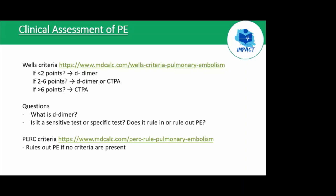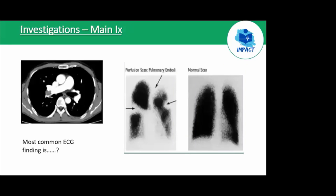When not sure about PE, you would proceed to CT pulmonary angiography (CTPA), which enables direct visualization of a thrombus within the pulmonary artery and has the best accuracy among non-surgical imaging methods. If CTPA is inconclusive and you still aren't sure, that's when you would go with a ventilation-perfusion scan.